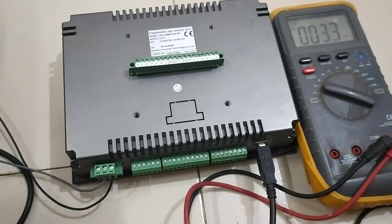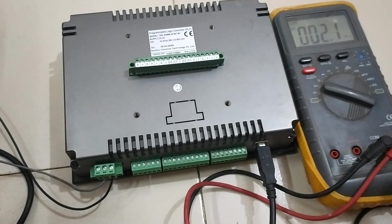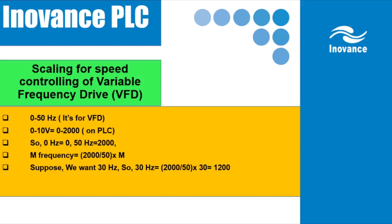In Siemens or some other PLCs the scaling ranges from 0 to 27,000 or similar. Now we will make a program to control a variable frequency drive using the analog output. Before writing the program, note that for a VFD the frequency range is generally 0 to 50 Hz, and our PLC output value is 0 to 2000. So 0 Hz corresponds to 0 and 50 Hz corresponds to 2000.